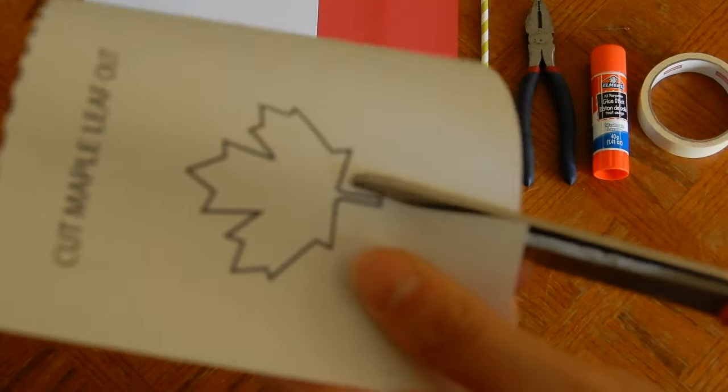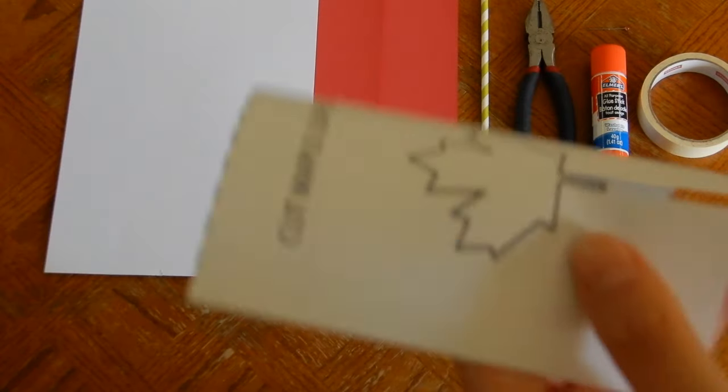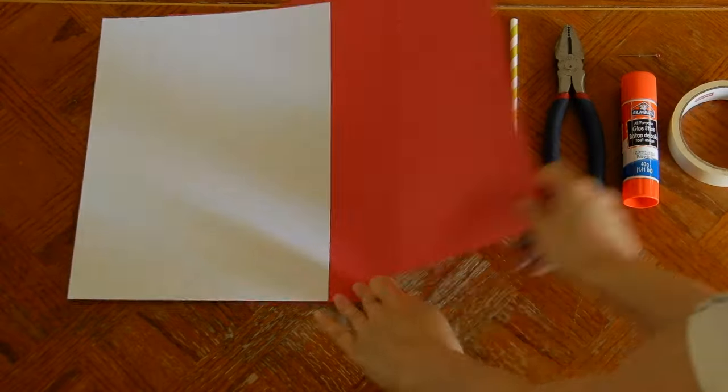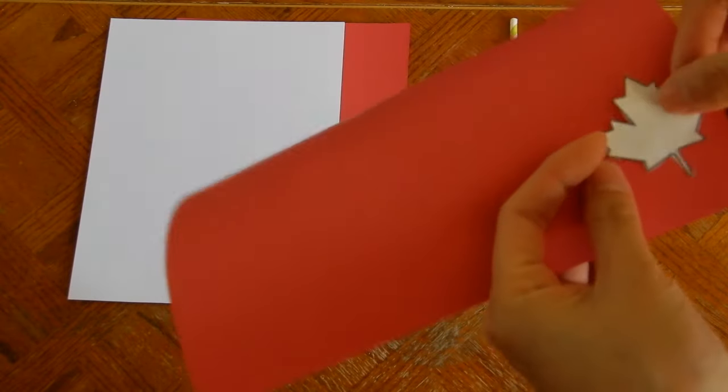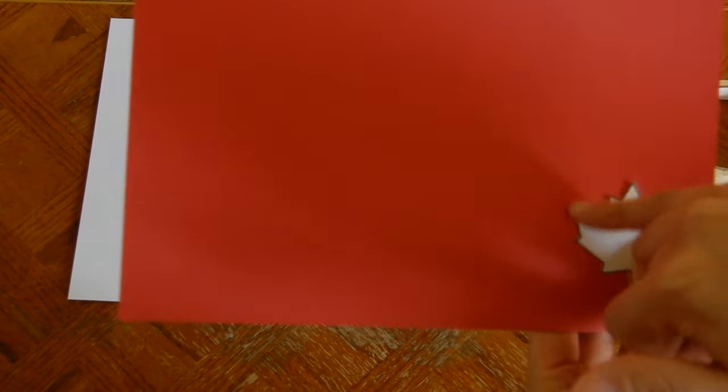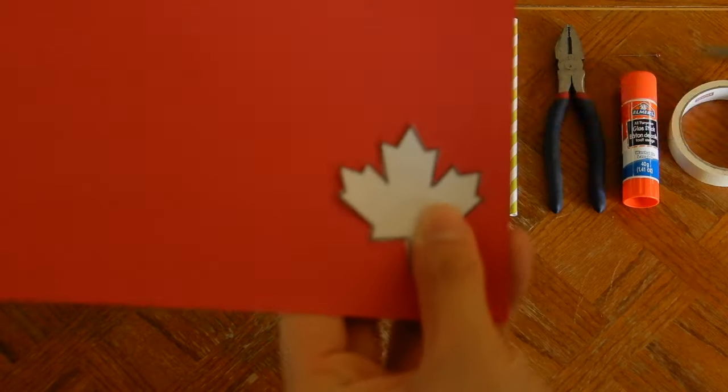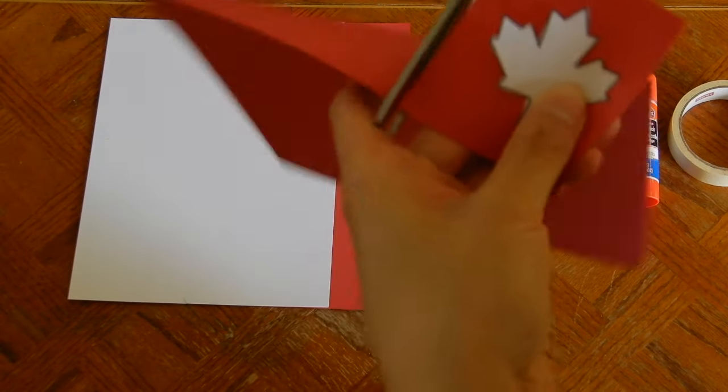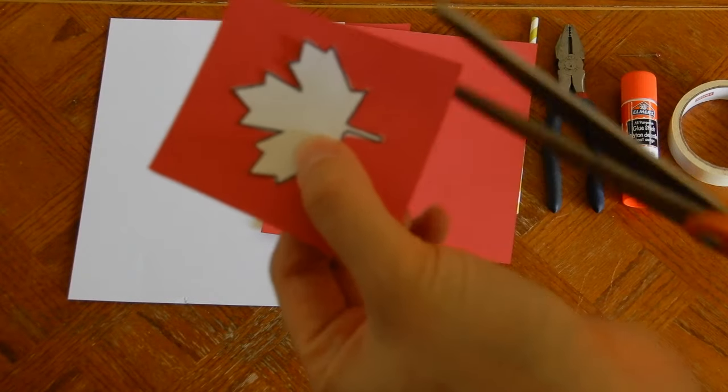So first you're going to cut out the maple leaf template. So now you have the cutout of the maple leaf. You can take the cardstock paper and either trace the maple leaf template and then cut, or cut a small square and just start cutting along the lines of the template.